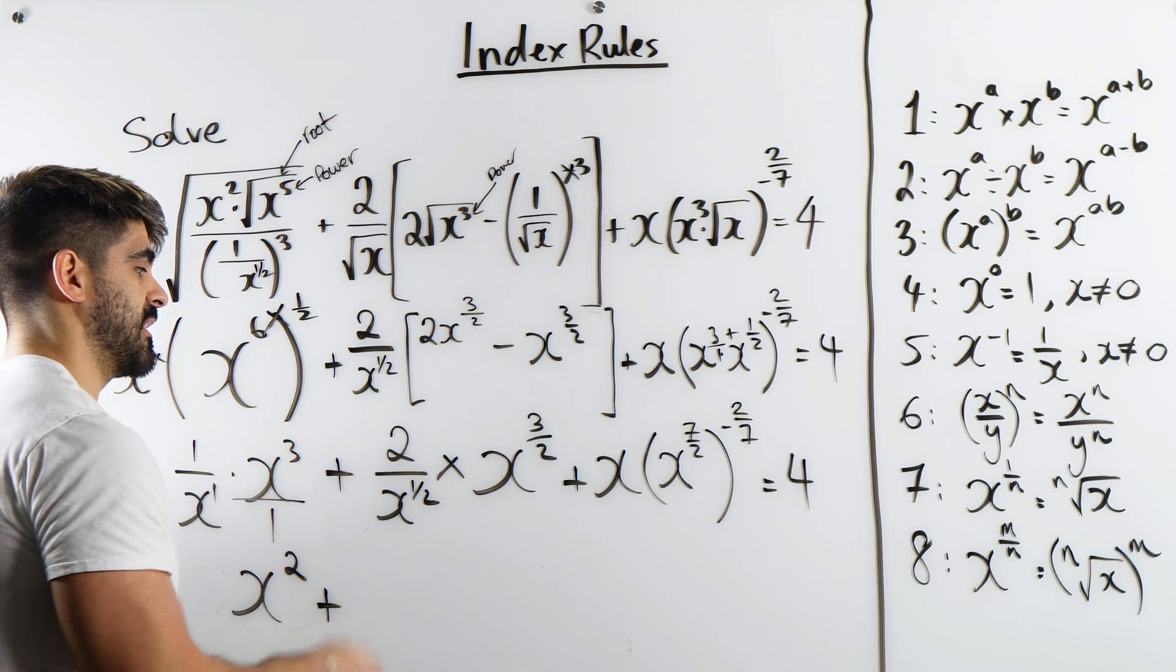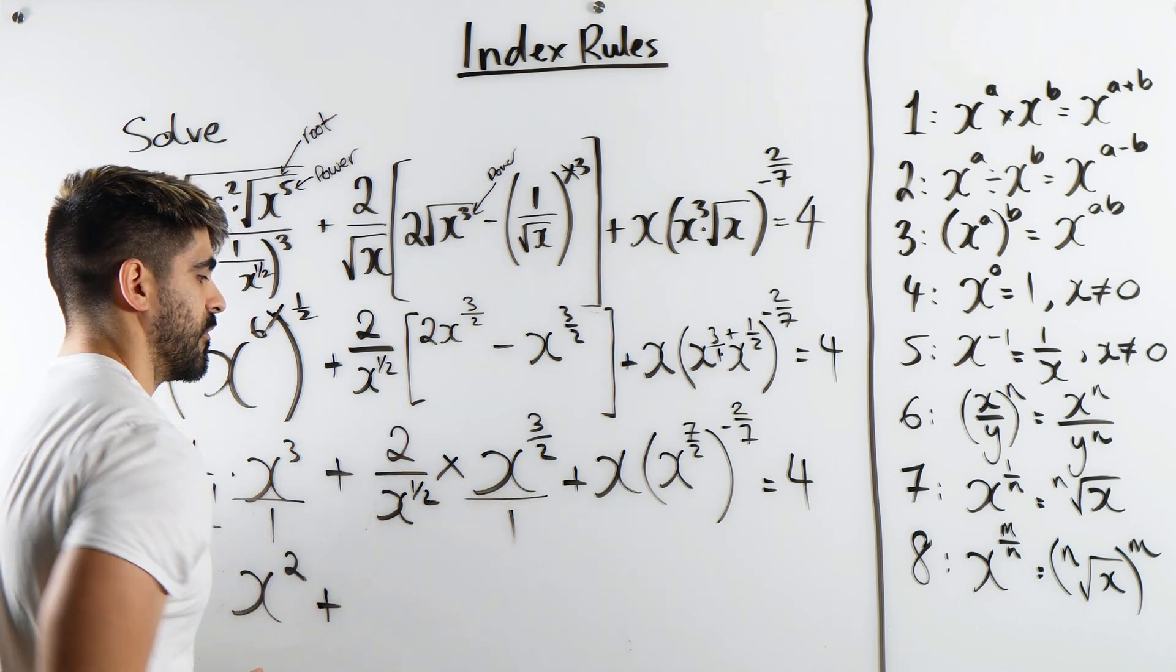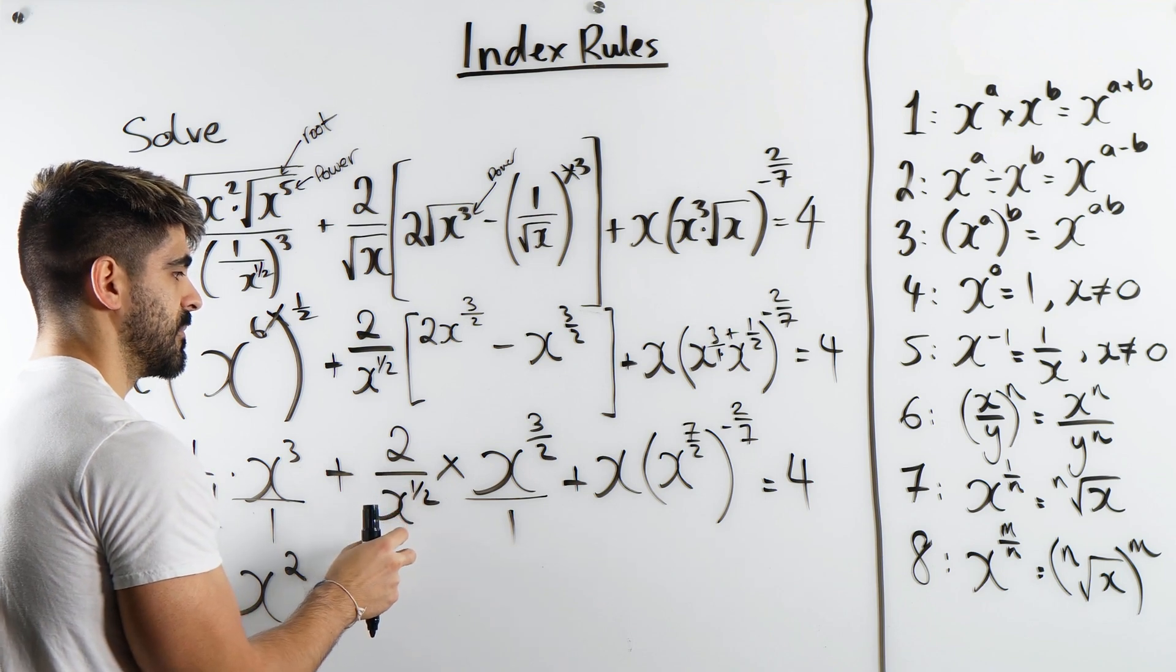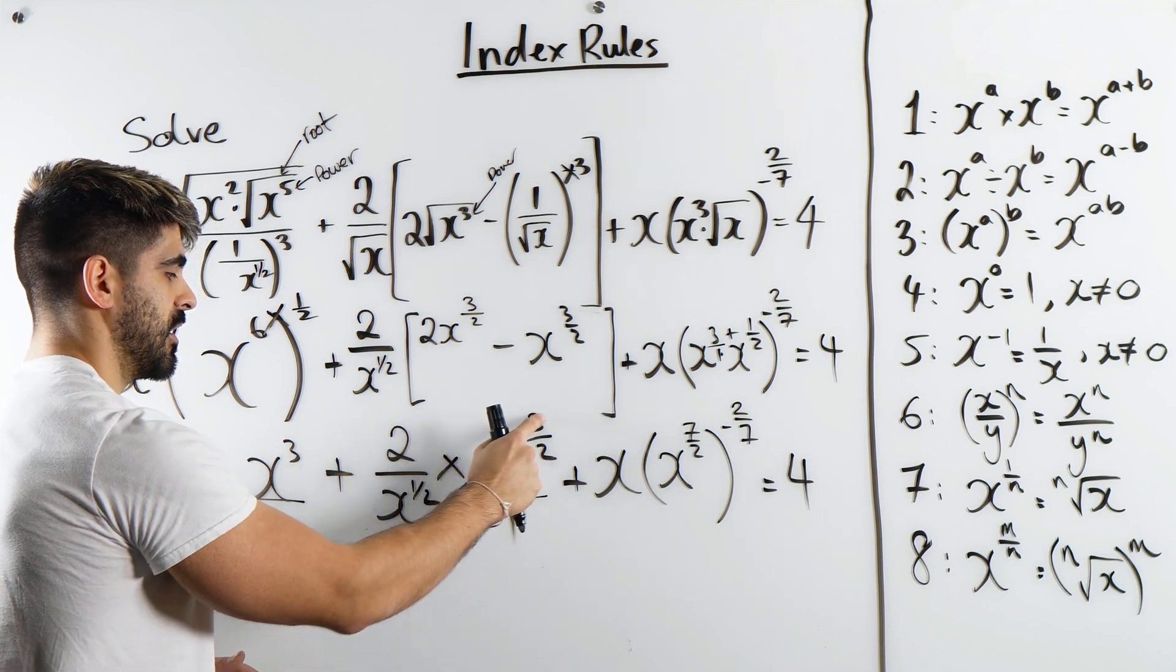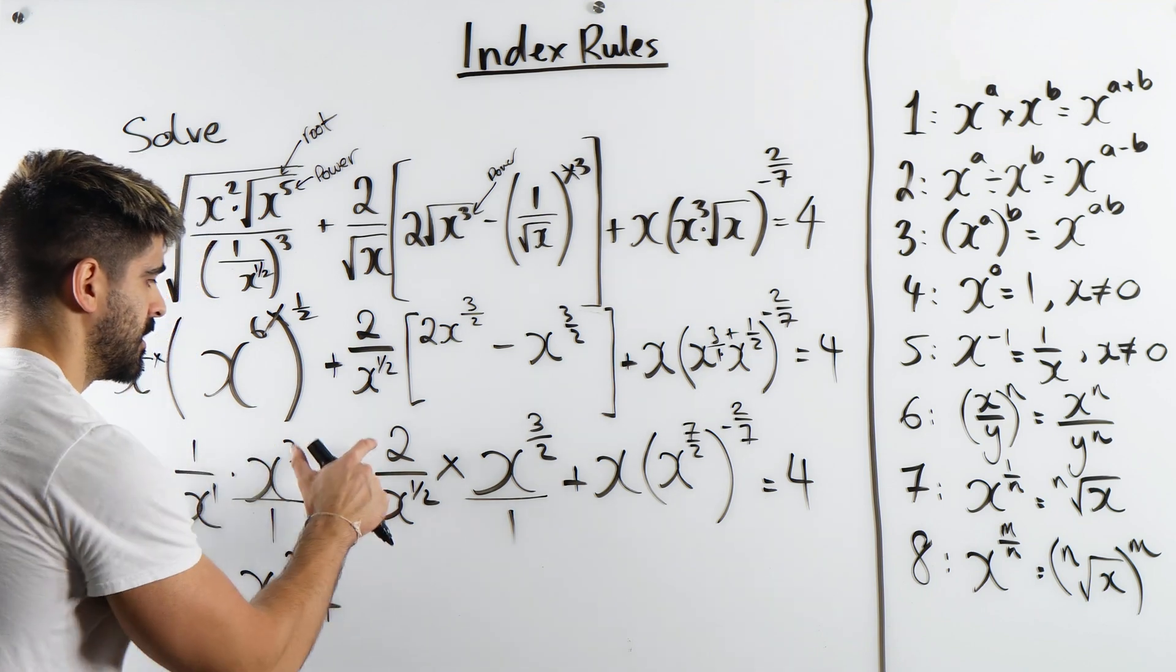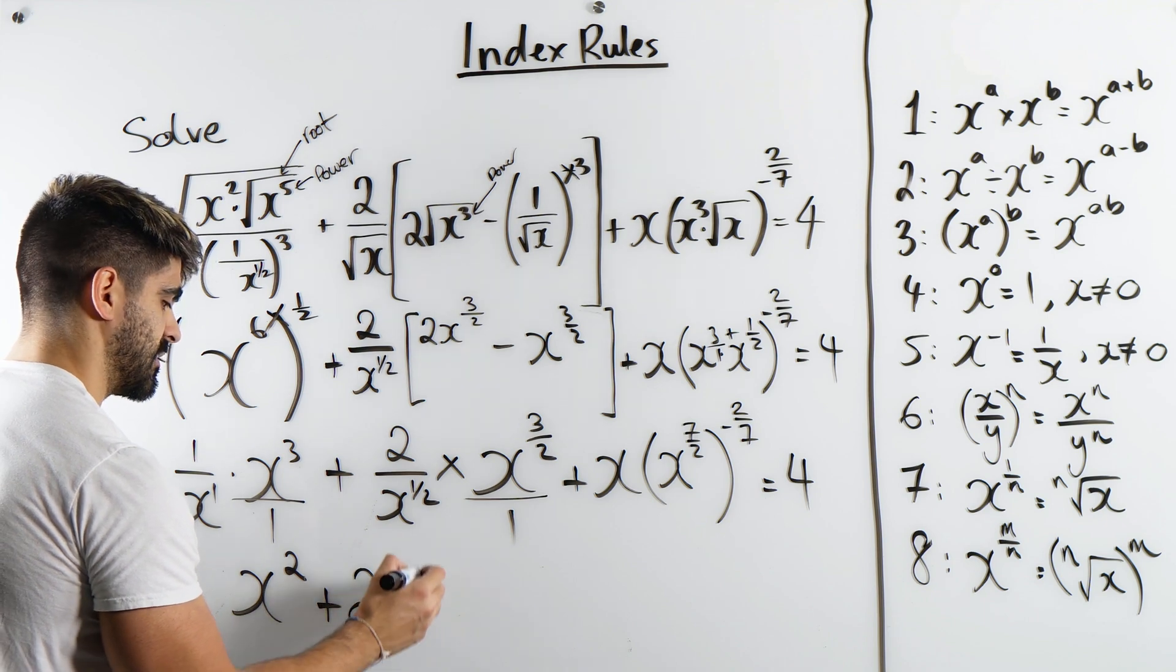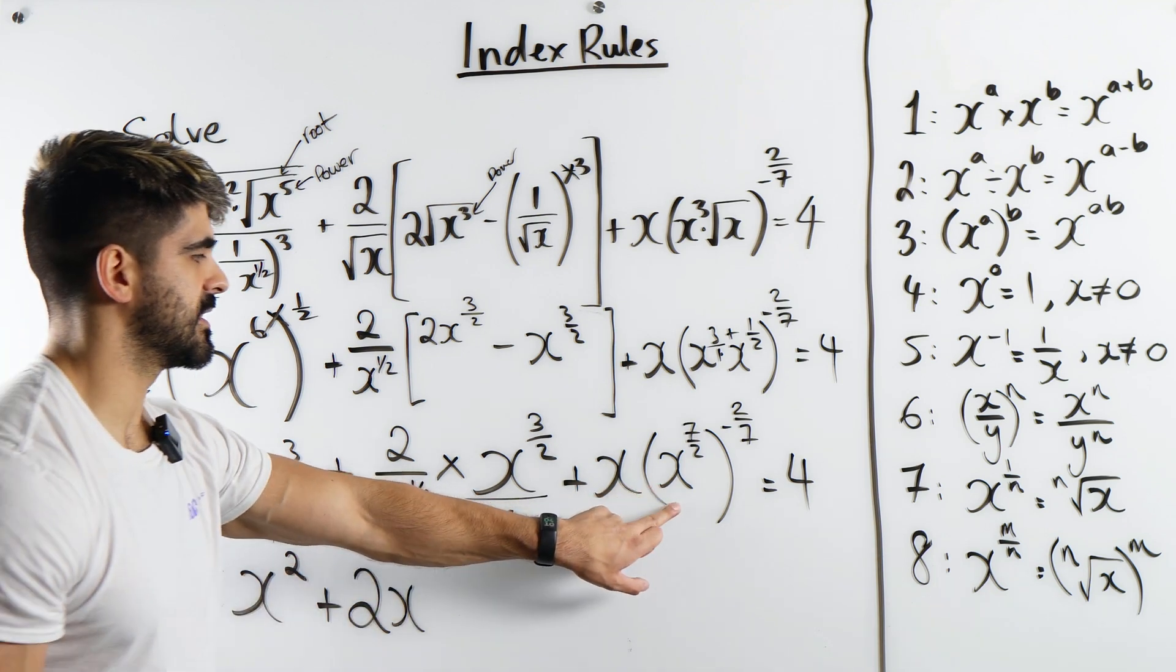Plus. Now here we're doing the same thing. Forget about the 2 for a second. We're dividing here. Remember that's over 1. So we're doing x to 3 over 2 divided by x to the half. We're subtracting the powers. 3 over 2 minus 1 half. You minus the numerators. 3 minus 1 is 2 over 2. 2 divided by 2 is 1. Don't forget the 2 there though. So we have 2x to the power of 1, which I'm not going to write down.